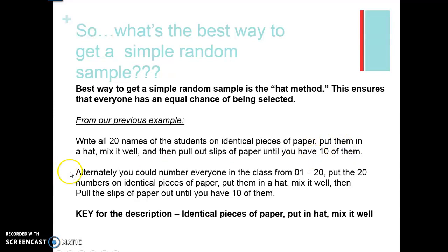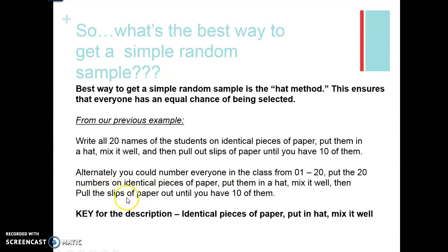Another way you could do this is to number everyone in the class from 01 to 20. Just note that those are the same length — 01, 02, 03 — two digits, so when you get to 10 you're continuing with two digits. Put the 20 numbers on identical pieces of paper, put them in a hat, mix it well, and then pull out slips of paper until you have 10 of them.